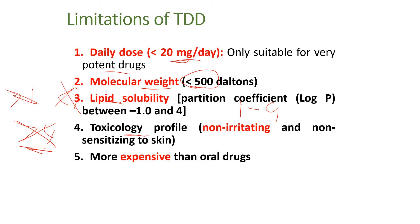Regarding the toxicology of the drug: it should not be irritant or sensitizing to the skin, because it will remain in contact with the skin for a long time — if it is irritating, it will be very painful. Also, compared to tablets, transdermal drug delivery systems are more expensive because they require special formulation, expensive excipients, and certain strategies and techniques that cost more. Additionally, a tablet machine can prepare 10,000 tablets per batch, while manufacturing a transdermal patch is more difficult and producing large numbers in a short time is challenging.